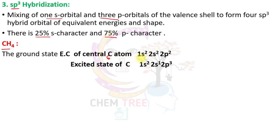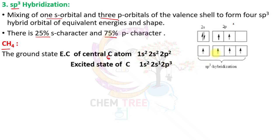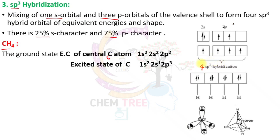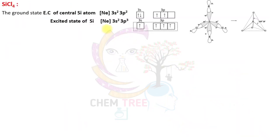For example, methane (CH₄). Carbon is the central atom with atomic number 6 and electronic configuration 1s², 2s², 2p². When carbon is excited, one 2s electron is promoted to the 2p orbital. The 2s and 3p orbitals intermix to produce four SP³ hybrid orbitals, which overlap with hydrogen atoms forming C–H sigma bonds. The geometry is tetrahedral with a bond angle of 109°28'.